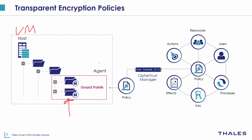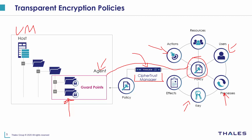The way you add additional security controls is to first install an agent on that host. That agent will receive a key and policy from the central management component, CypherTrust Manager. You create a security policy, which is a definition of what users, what type of processes, and what kind of actions should be taking place on those files, and tied with that is a key. That policy gets pushed to the agent, and the agent applies that policy to the files, creating what we call a guard point — a point at which we're applying a policy and its rules to files, meaning a directory or set of directories.